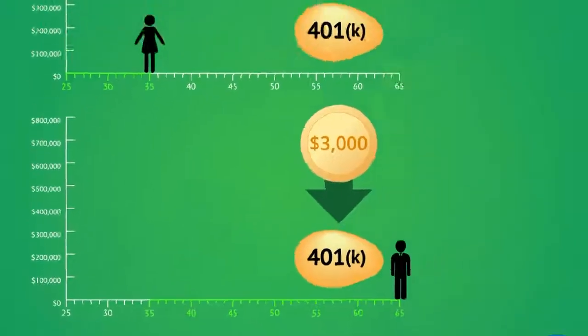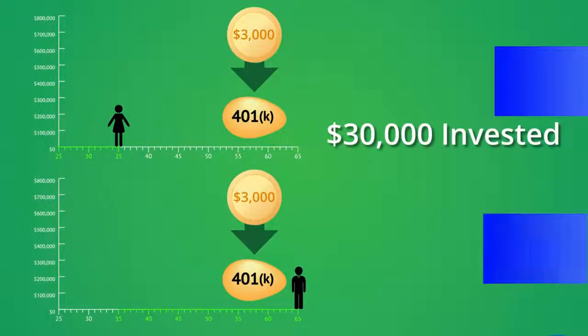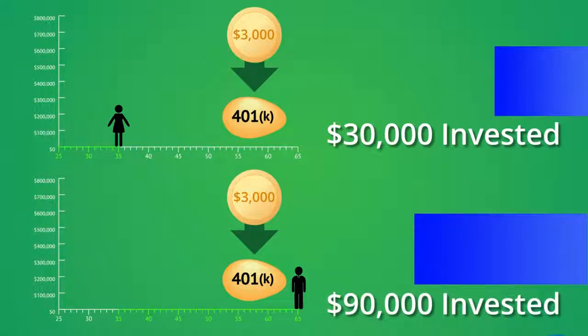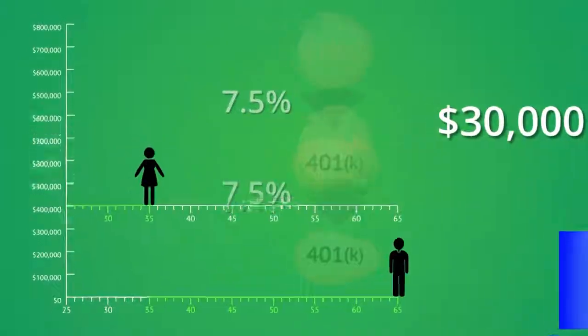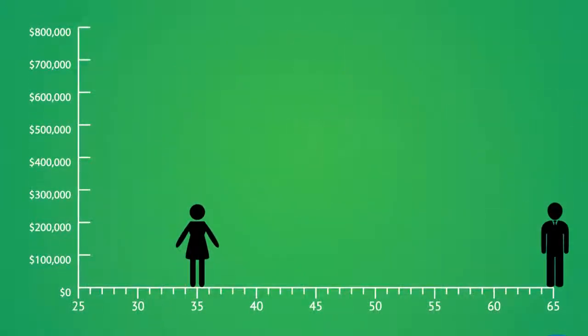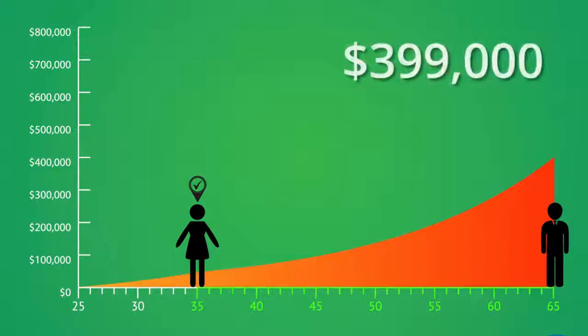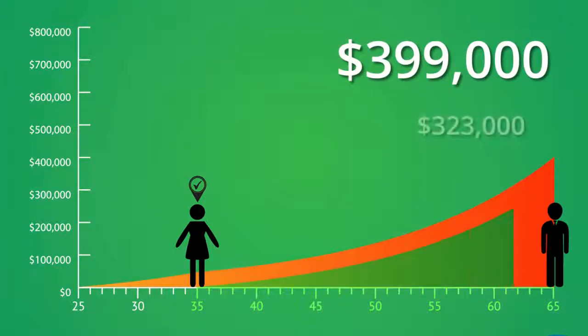In the end, Mary will have invested only $30,000, while John has invested $90,000. If they both earn 7.5% on their investments year in and year out, who will have the bigger account balance at age 65? Because Mary's contributions compounded for a much longer time, her account will be $399,000, much larger than John's $323,000.